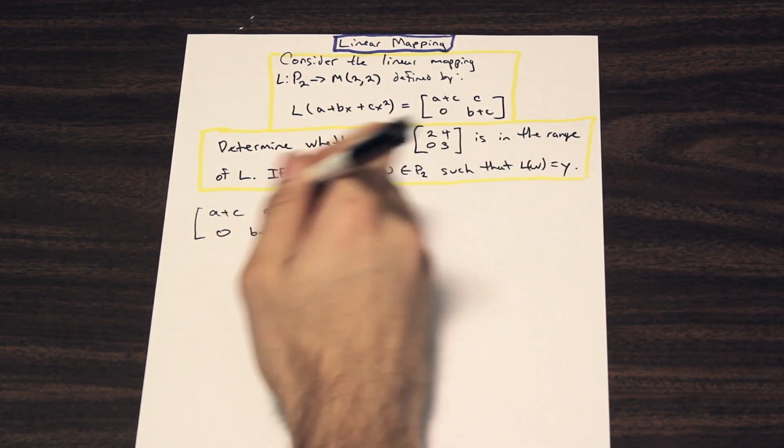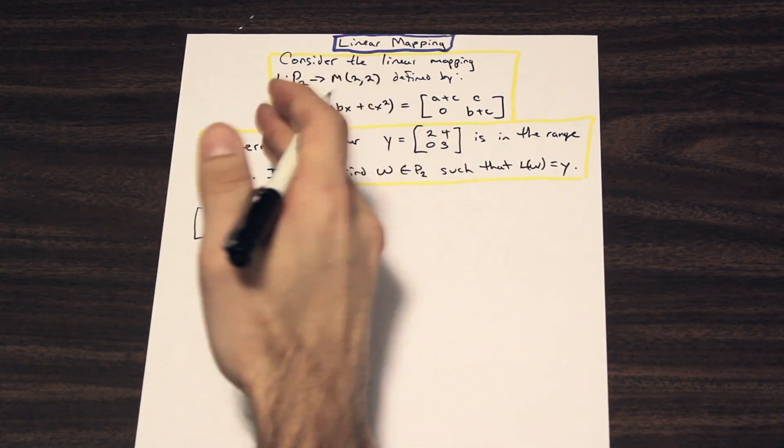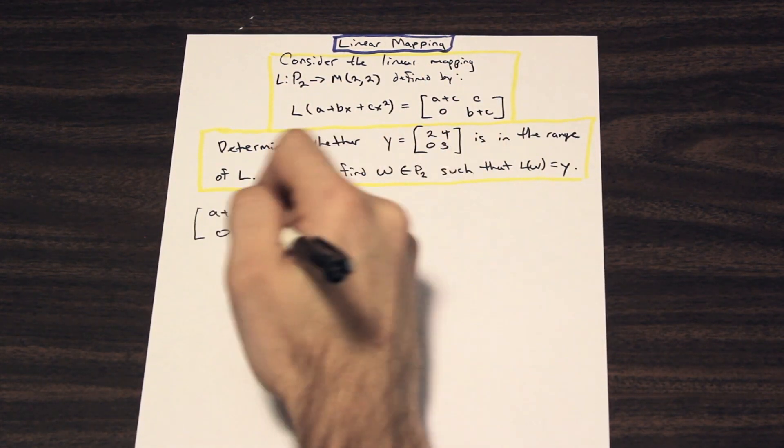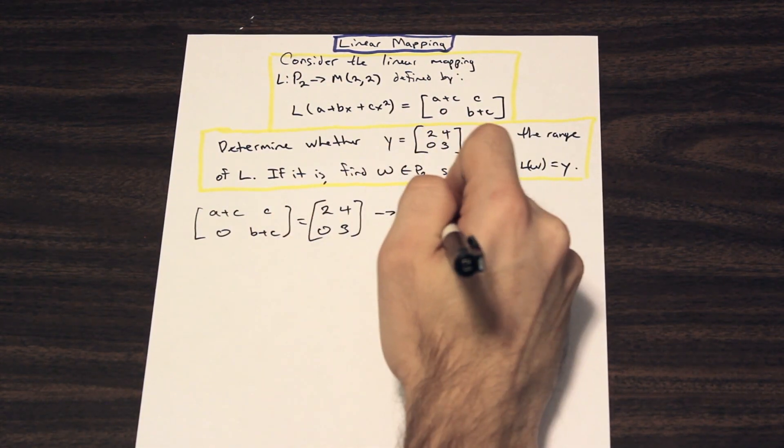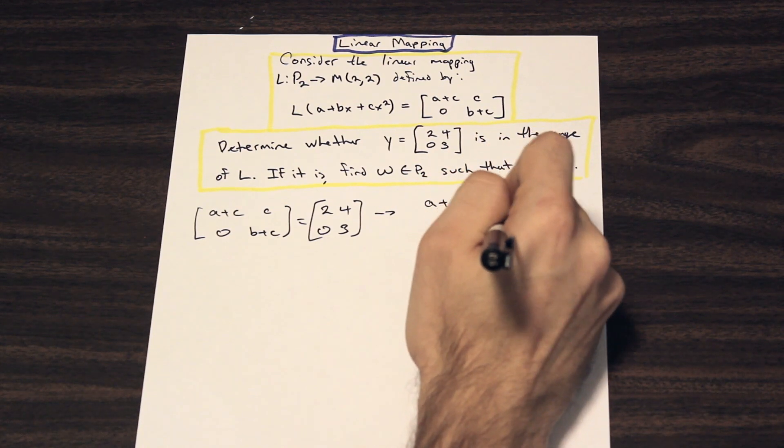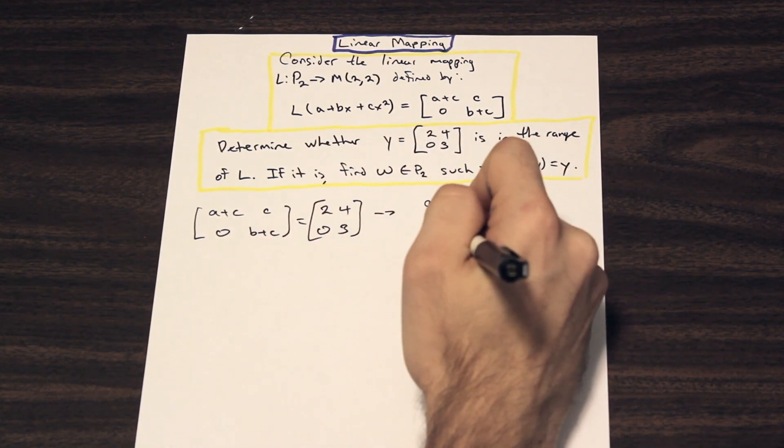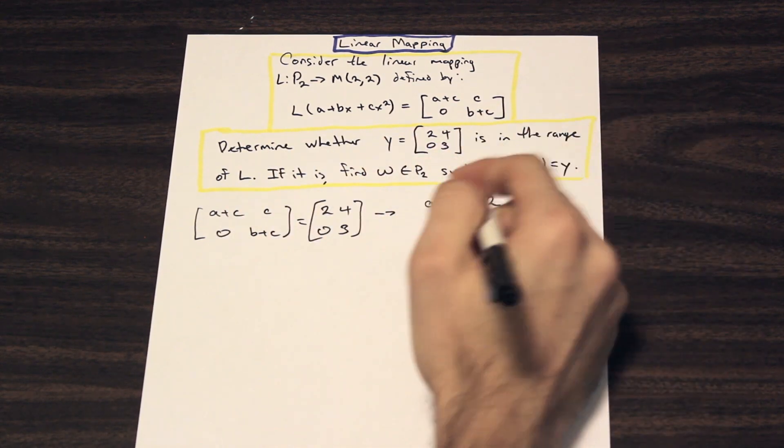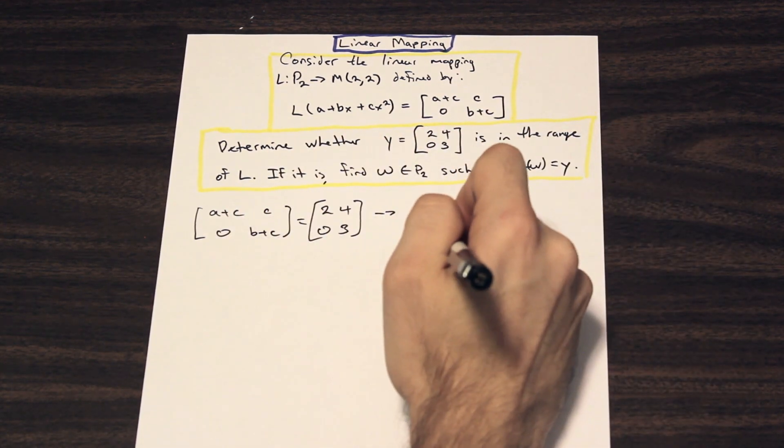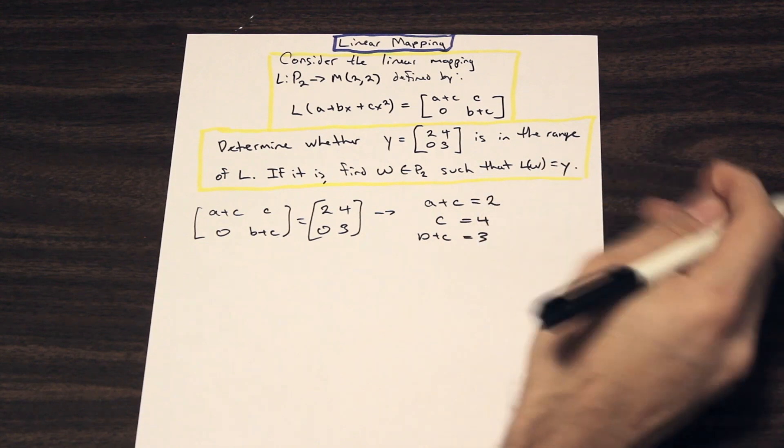So we're going to equate each element of the matrix to the other element. So over here, we're going to say that A plus C is equal to 2. We're going to say that C is equal to 4, 0 is equal to 0, so that's nothing, and B plus C is equal to 3.